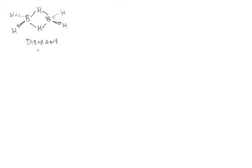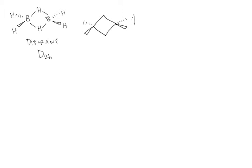Diborane belongs to the D2h point group, which is actually the same point group as ethylene. So many of the conclusions we'll draw about the form of the molecular orbitals for diborane could also apply to the ethylene molecule. As we go through the problem, I'll draw the skeletal connectivity of diborane in a couple of different orientations. In the first orientation, we have the bridging hydrogens and the boron atoms in the plane of the page, with the x-axis vertical and the diborane axis as our z-axis.